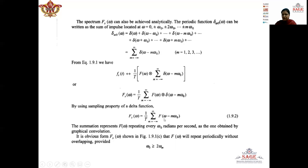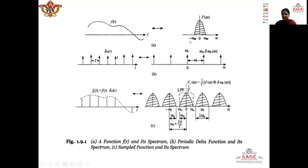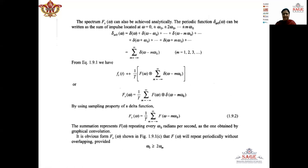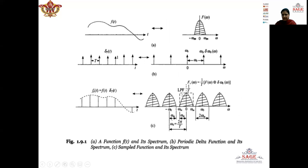So we will get F(omega) repeating every omega_naught radians per second. The basic representation of F(omega) is a spectrum varying from −omega_m to +omega_m. When shifted every omega_naught, this spectrum repeats every omega_naught radians per second. The resulting spectrum shows the basic spectrum of F(omega) getting repeated after every omega_naught radians per second, with amplitude 1/T. So we get a repeated basic spectrum of F(omega) after every omega_naught radians per second.